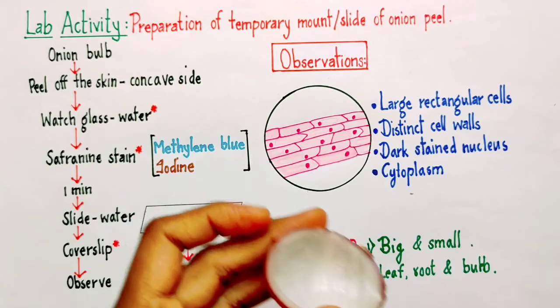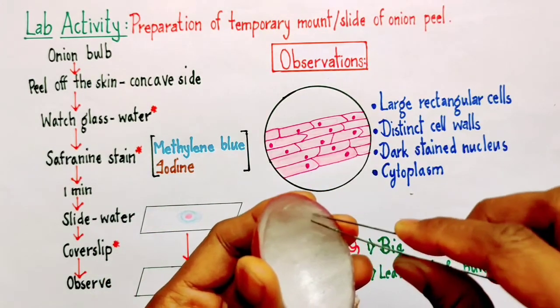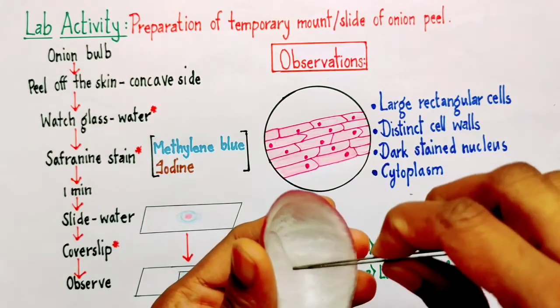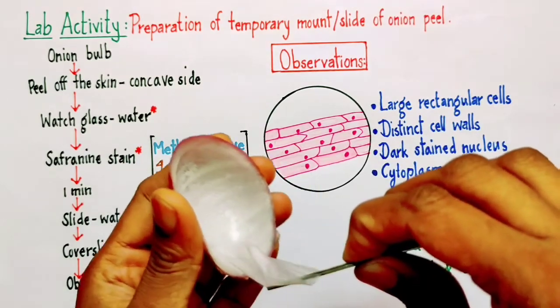Now with the help of forceps, we need to carefully peel out the inner skin. This is how it comes out.